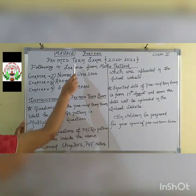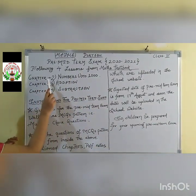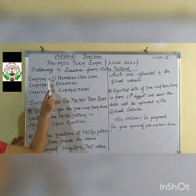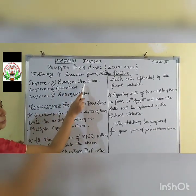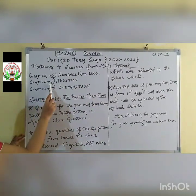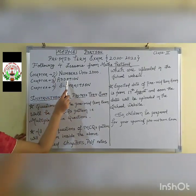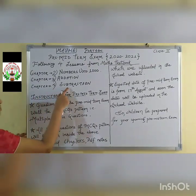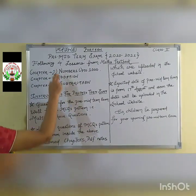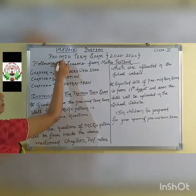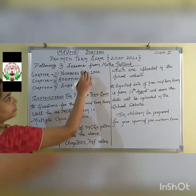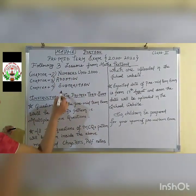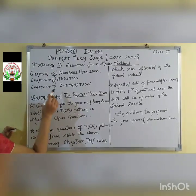These are some syllabi of your maths textbook. Chapter number 2: Numbers up to 1000. From the textbook you can see chapter number 2 is there. Chapter number 3: Addition. Chapter number 4: Subtraction. So these 3 chapters will be coming in your pre-midterm examination 2020-2021. These are the chapters which are coming in your pre-midterm exam maths syllabus.